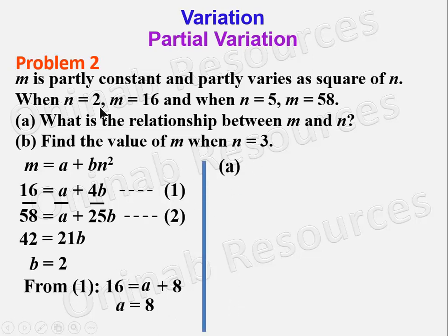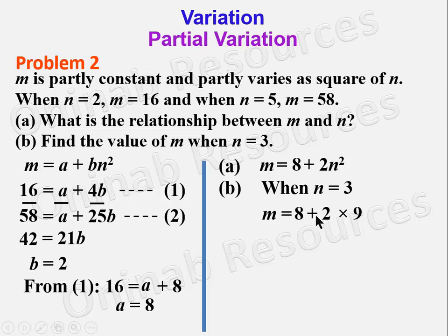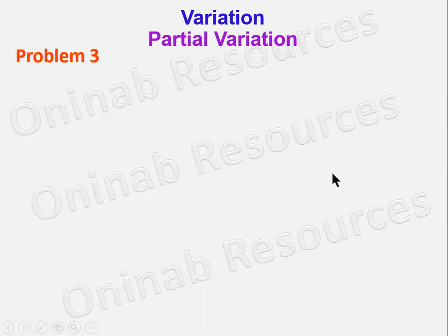Substituting b = 2 into equation 1: 16 = a + 8, so a = 8. For part a, the relationship between m and n is m = 8 + 2n². For part b, when n = 3: m = 8 + 2(9) = 8 + 18 = 26. So m = 26.